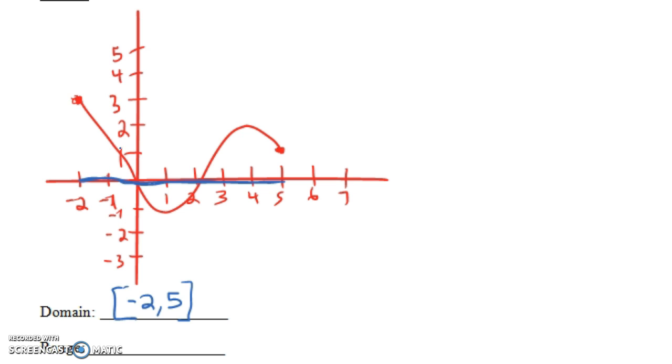Now the range is the set of all output values. And notice if we projected this function onto the y-axis here, we'd be projecting onto this interval here along the y-axis between minus 1 and 3. And all those numbers between minus 1 and 3 are possible output values. So that is the range, minus 1 to 3. So the domain and the range are intervals.